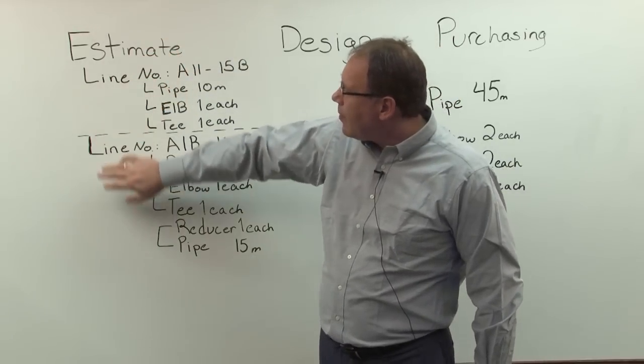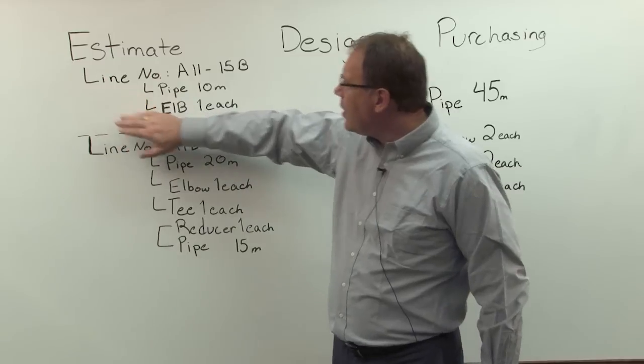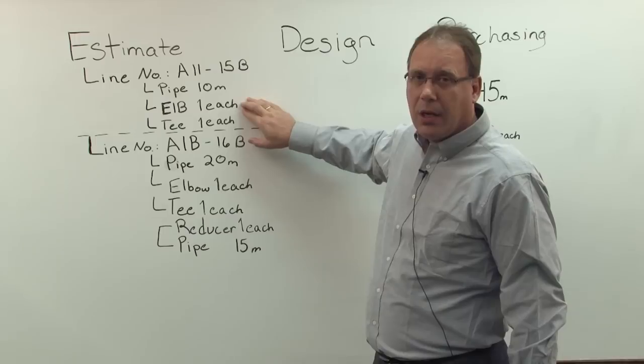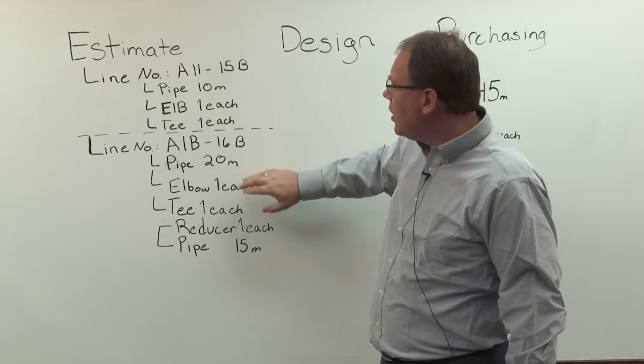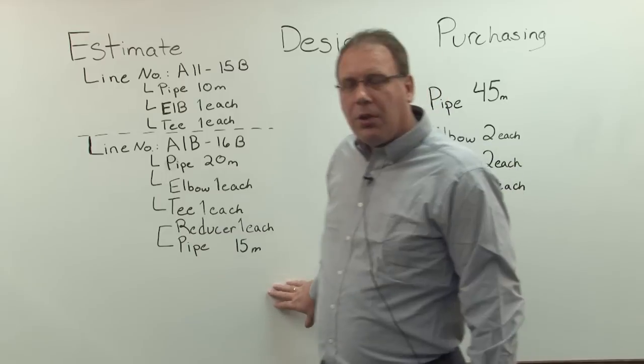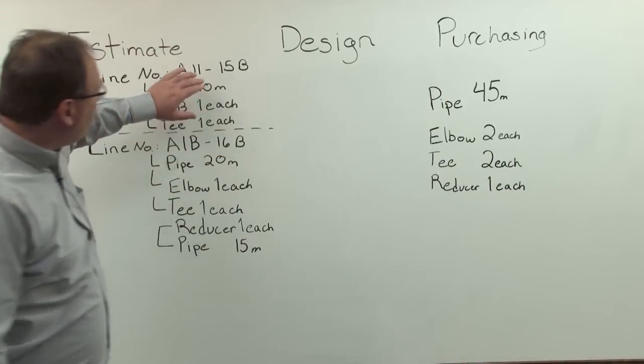So I have an estimate per line number in this case. I have here two line numbers. And these two line numbers have a pipe in it with 10 meters, an elbow with one each, and a tee with one each, and another pipe, another elbow, and so on and so on. So now if you want to know how much needs to be purchased, you're basically summarizing all these quantities.